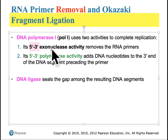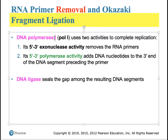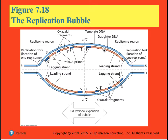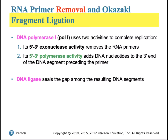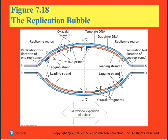DNA polymerase 1 can remove material in front as well as make material behind — it has 5-to-3 exonuclease activity to remove in front, and still possesses 5-to-3 polymerase activity behind. The reason DNA polymerase 1 doesn't do everything is that it doesn't like to stick around — it's unreliable. DNA polymerase 3 is a long-distance traveler and reliable, whereas DNA polymerase 1 is a short-distance performer. One last enzyme needed is DNA ligase, which seals gaps together once the RNA has been cleared out. Without it, the DNA would never be joined into a continuous strand.